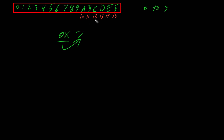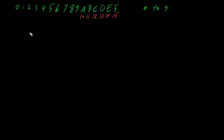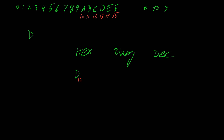Let's say we have hexadecimal D and want to convert it to decimal. We can use binary as a bridge. Hex D is equivalent to 13 in decimal. For every hex digit we have 4 bits, so putting the 4 bits and place values: to get 13 we turn on 8 plus 4 which is 12, plus 1 which is 13. The decimal number is also 13.